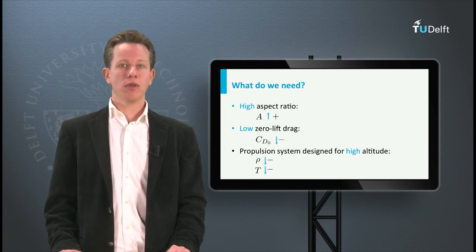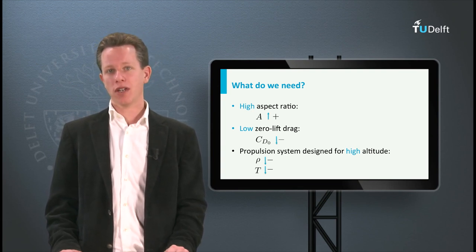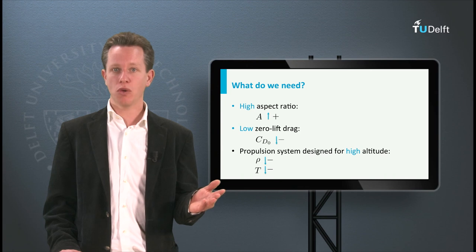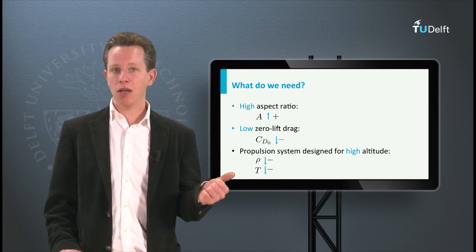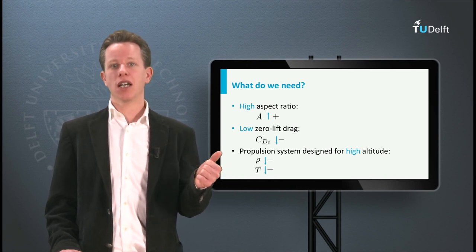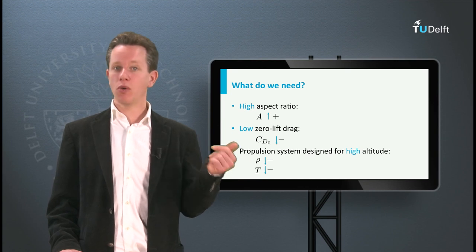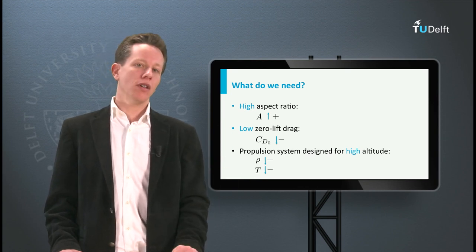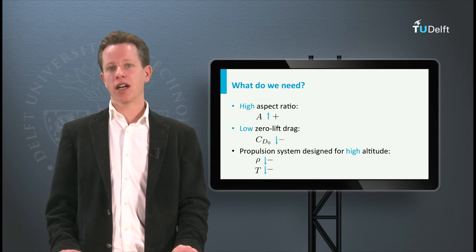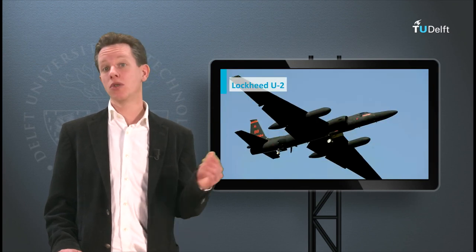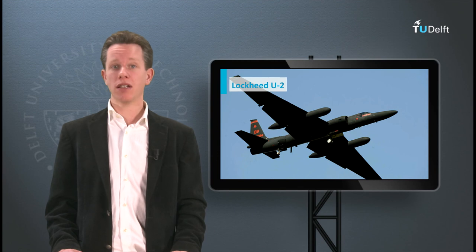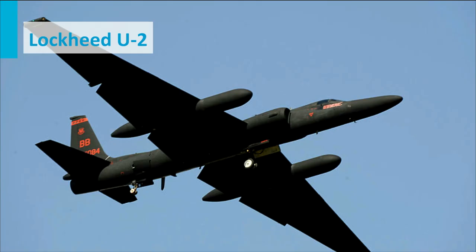Based on the calculations, we determined that it is beneficial to have a high aspect ratio wing and an engine which is able to operate at very low atmospheric temperatures and at low air density. A nice example of an aircraft designed for high altitude flight is the Lockheed U-2, which is in fact a reconnaissance aircraft. This aircraft was able to fly so high that enemy air defenses could not do anything about it when this plane was flying over their country.